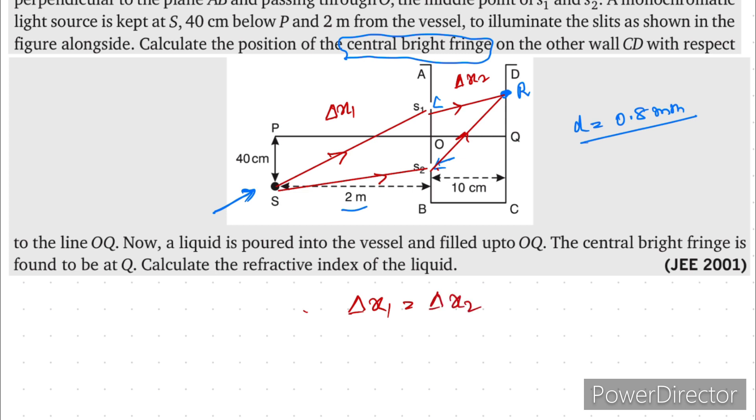What is the path difference, delta x1 and x2, this is nothing but D sin alpha is equal to D sin theta. Now you will be asking what is alpha and theta. So alpha and theta is nothing but these are the angles.